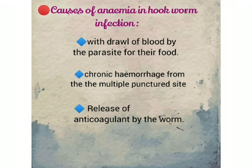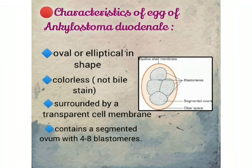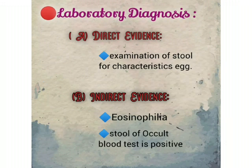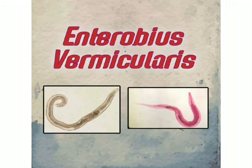Characteristics of the egg of Ankylostoma duodenale: they are oval or elliptical in shape, colorless, surrounded by a transparent cell membrane, and contain a segmented ovum with four to eight blastomeres. Laboratory diagnosis: direct evidence is examination of stool for characteristic eggs. Indirect evidence includes eosinophilia and stool occult blood test, which is positive.